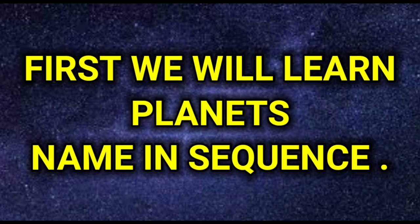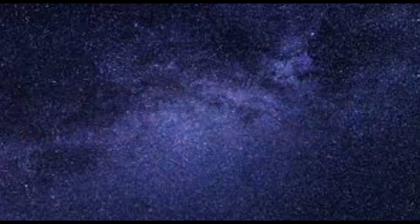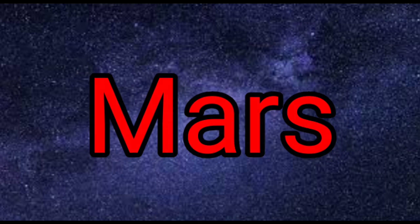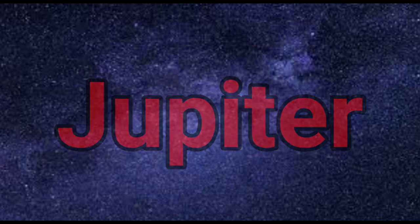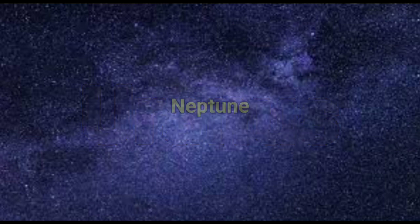First, we will learn the planets' names in sequence. Mercury, Venus, Earth, Mars, Jupiter, Saturn, Uranus, Neptune, Pluto.